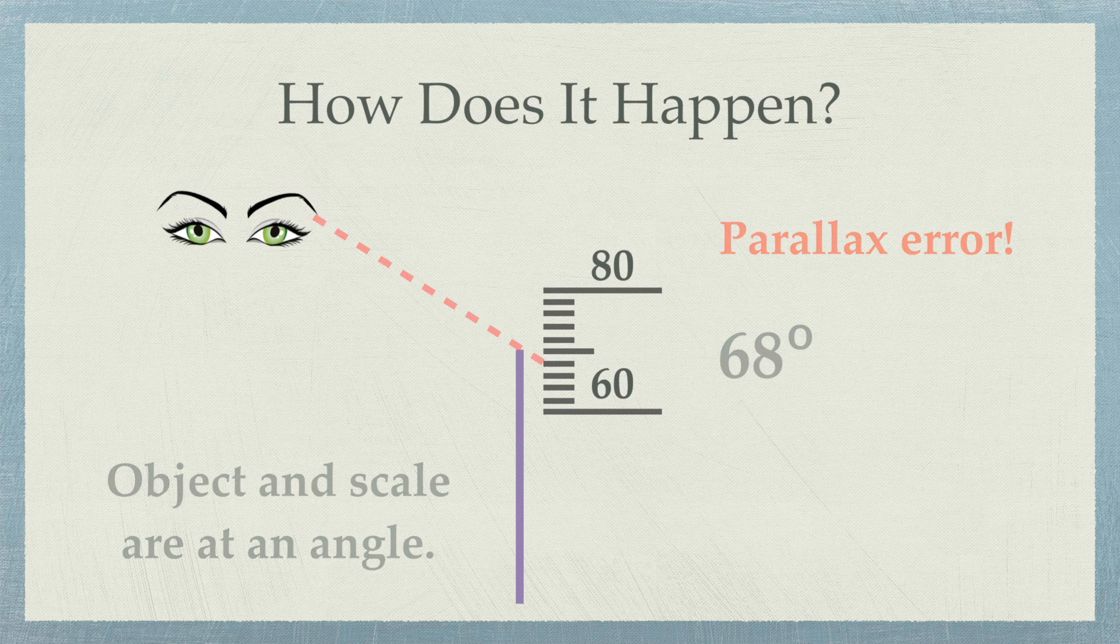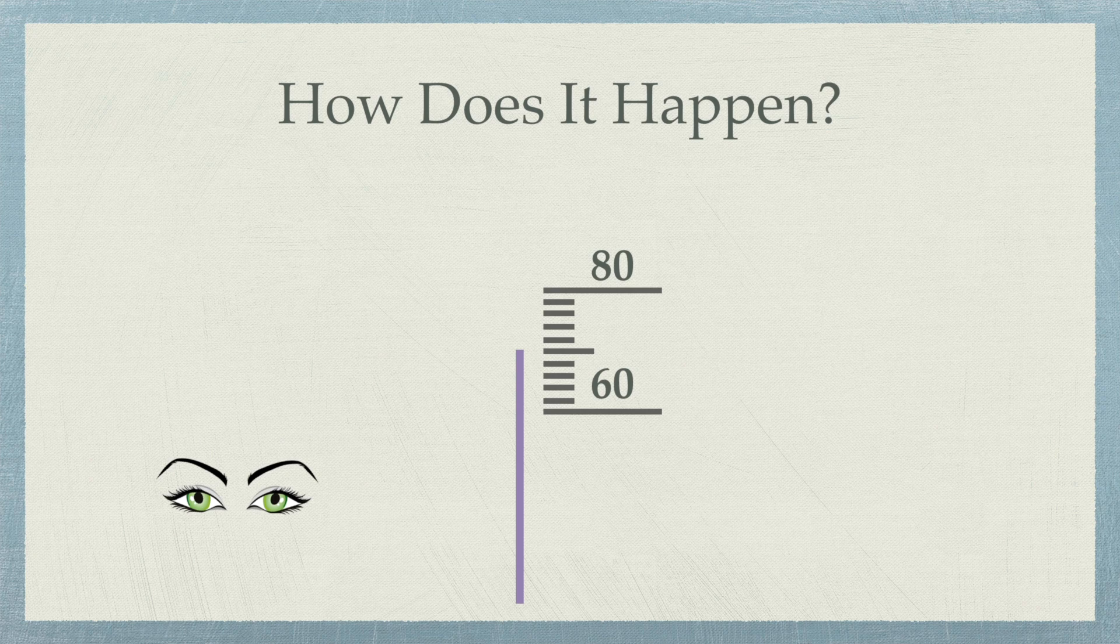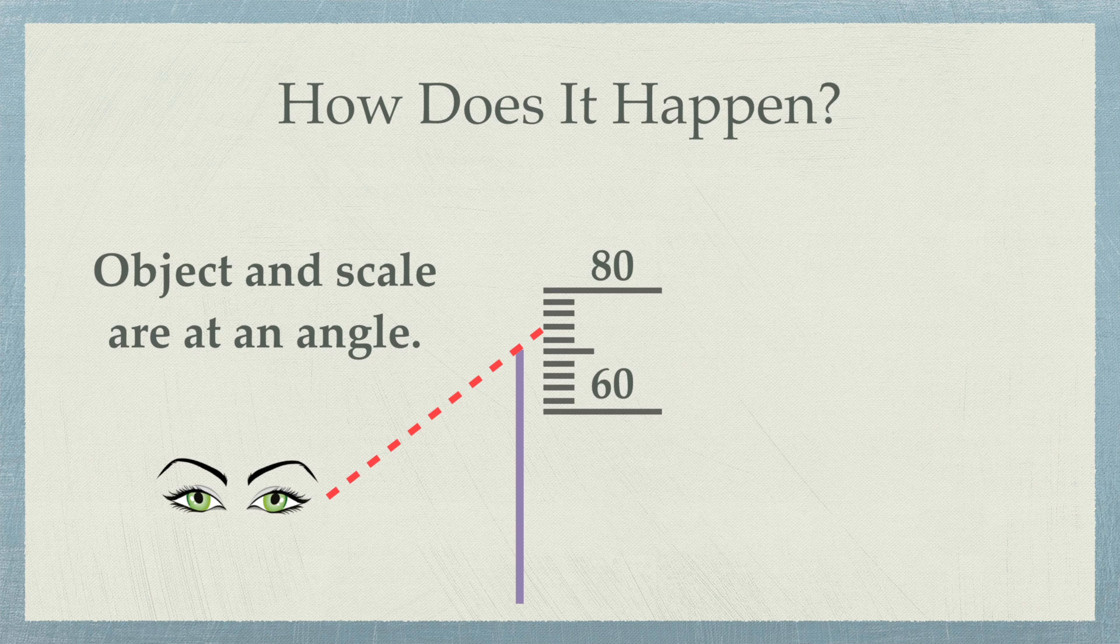Similarly, if we look from the bottom and draw the line of vision, the object and the scale are still at an angle. Now, the object is seen aligned to 74 degrees.